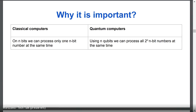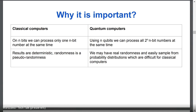Why is this important? In classical computers, on n bits we can process only one n-bit number at the same time. Using n qubits, we can process all 2 to the power of n n-bit numbers simultaneously. In classical computers, results are deterministic — randomness is only pseudo-randomness. But in quantum computers, we may have real randomness and can easily sample from difficult probability distributions which are hard for classical computers.